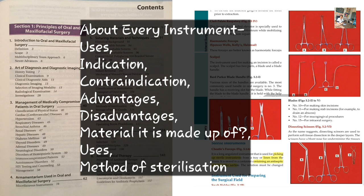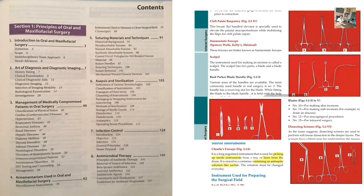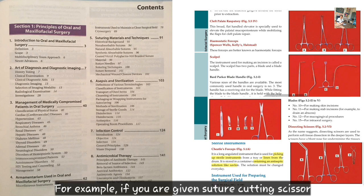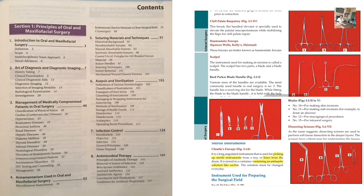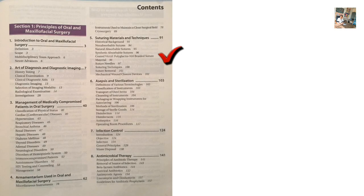You should also know the autoclaving procedure. The instrument is made up of stainless steel and is used as suture-cutting scissors — describe it in this way. After that, one important topic is cryosurgery. Then, give a brief reading of Chapter 5: Suture Material and Techniques.